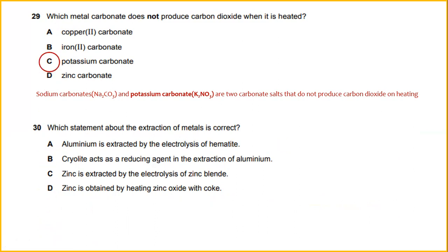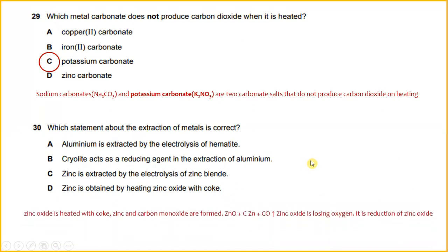Which statement about the extraction of a metal is correct? Zinc oxide is heated with coal, and zinc and carbon monoxide are formed. Zinc oxide is losing oxygen, and this is a reduction of zinc oxide. So zinc is obtained by heating zinc oxide with coal.